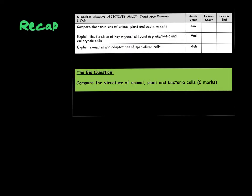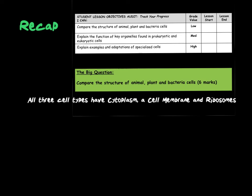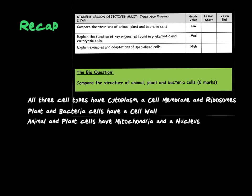So, what have we looked at in this tutorial video? We have compared the structure of animal, plant and bacteria cells. We've looked at the function of the key organelles found in both prokaryotic and eukaryotic cells. And we have looked at some examples and adaptations of three different specialised cells. Our big question today was to compare the structure of animal, plant and bacteria cells. All three cell types have cytoplasm, a cell membrane and ribosomes. Both plant and bacteria cells have a cell wall. Animal and plant cells have mitochondria and a nucleus. Plant cells have chloroplasts and a vacuole. And bacteria cells have a plasmid, chromosomal DNA and a flagellum.